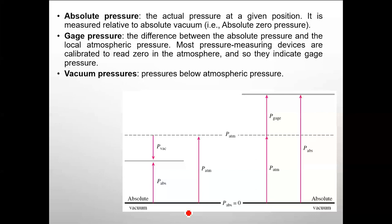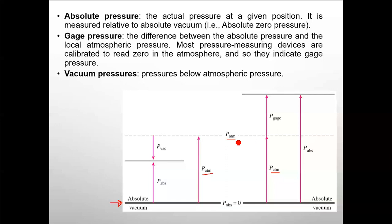Absolute vacuum means there is no air or gas present — it is the lowest reference. The second level is the atmosphere; the pressure from absolute vacuum to that level is atmospheric pressure. This atmospheric pressure remains constant in both conditions.